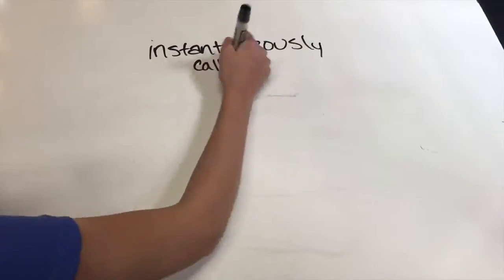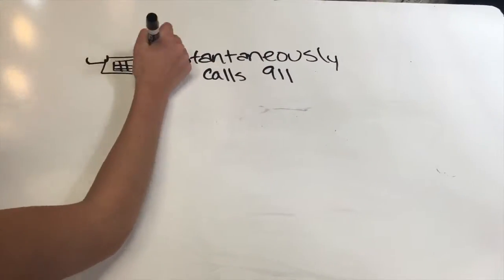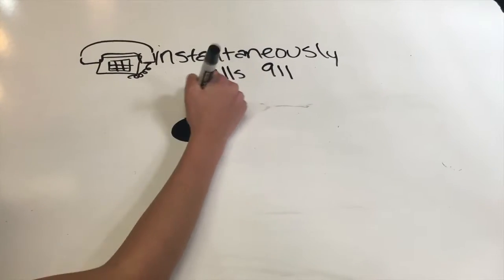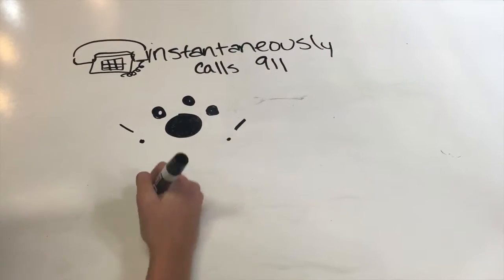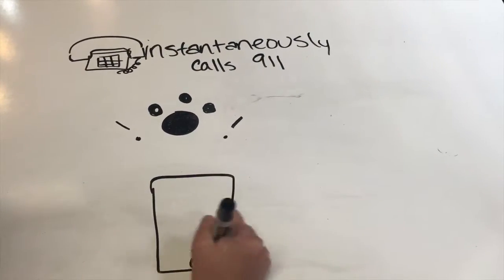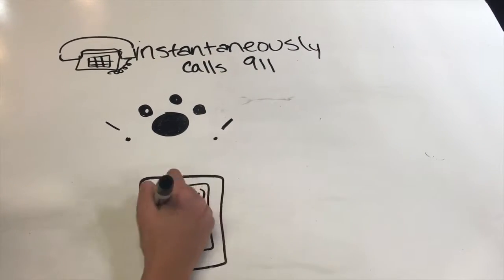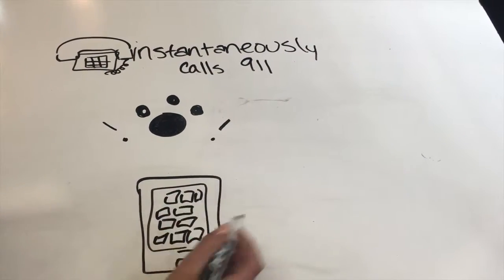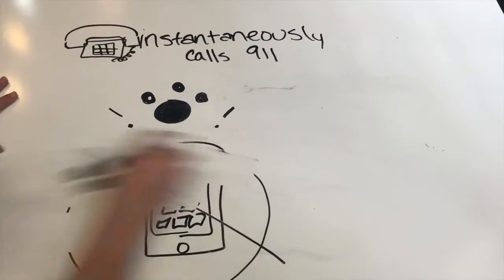The Teddy Text is a product that can instantaneously text 911 your location in any dangerous situation with just the simple press of a pop. This product is designed to safely and secretly provide your location to 911 during a school lockdown, home invasion, or other situations if you are not able to reach a phone.